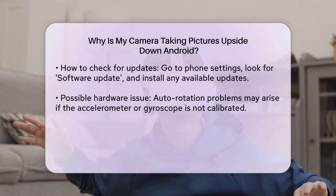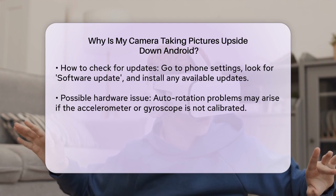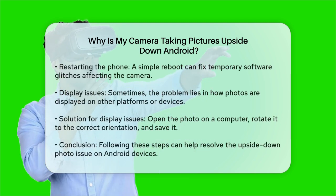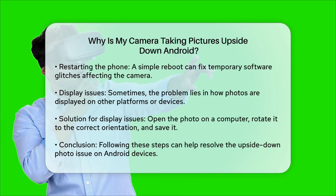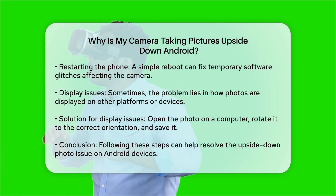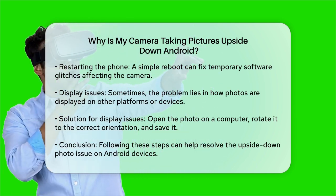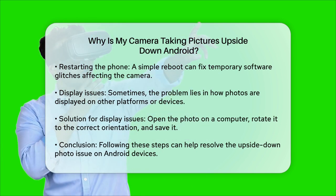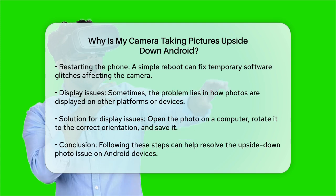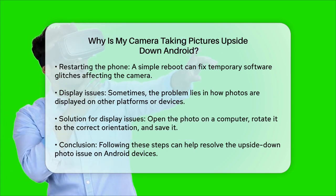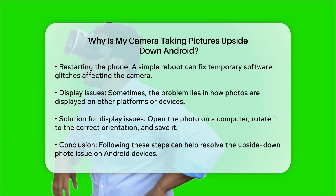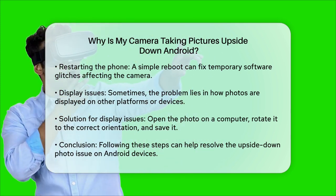In some cases, the issue might not be with the camera app itself, but with how the photos are being displayed. If you are uploading photos to other platforms or viewing them on your computer, the orientation might get changed due to the way the image is processed. To fix this, open the photo on your computer, rotate it to the correct orientation using the default photo editing software, and then save it. This ensures that the photo displays correctly wherever you view it.